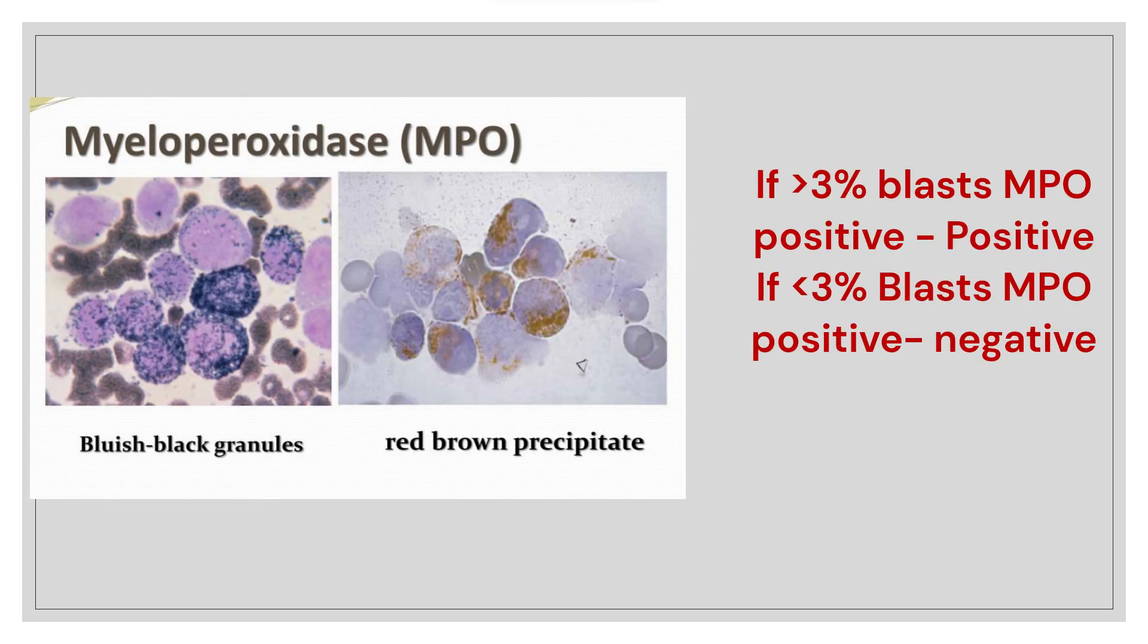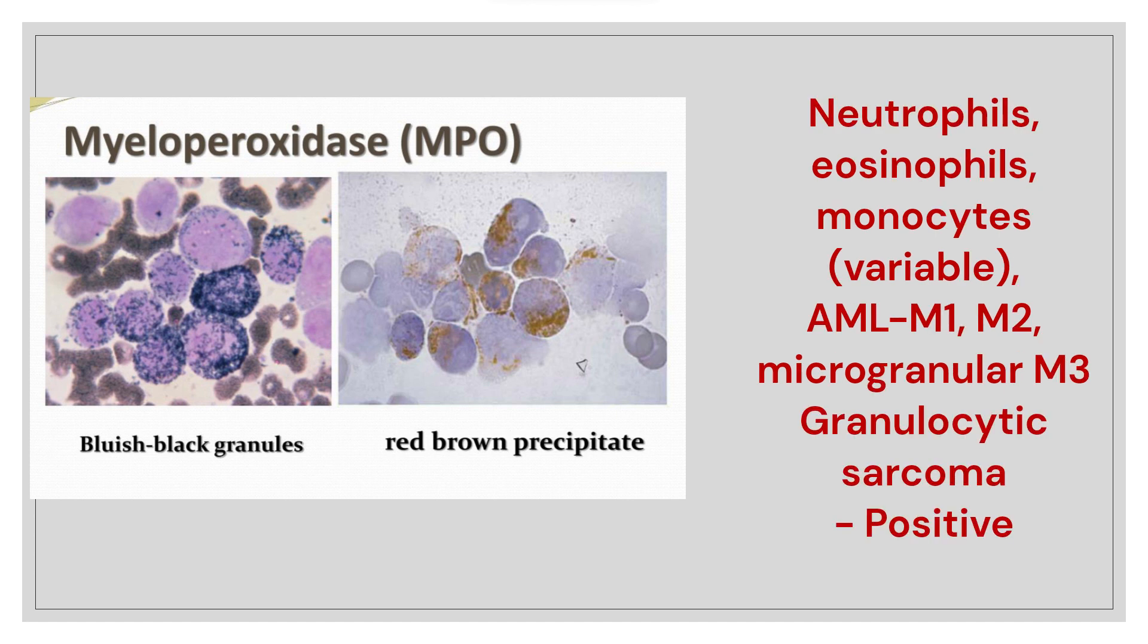Let's see the result. MPO positive: if more than 3% blast is MPO positive, then case is reported as MPO positive. If the blasts are less than 3% stain, then the report is negative. Neutrophil, eosinophil, and monocyte stain MPO positive.